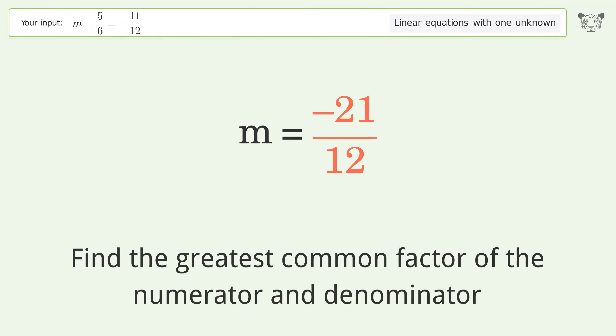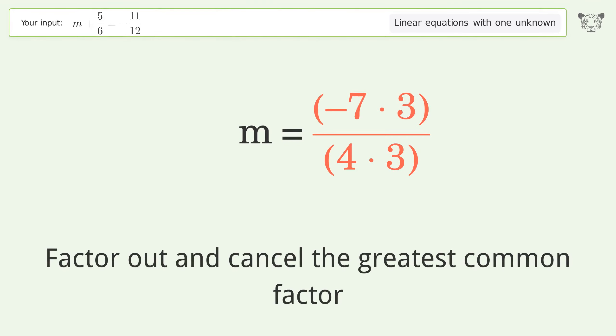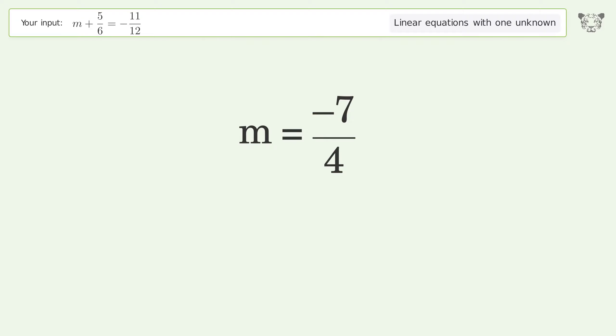Find the greatest common factor of the numerator and denominator. Factor out and cancel the greatest common factor. And so the final result is m equals negative 7 over 4.